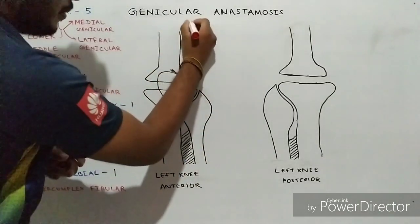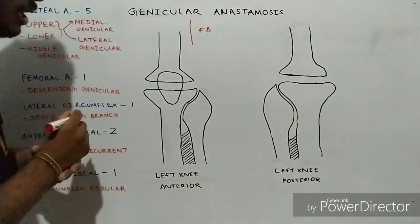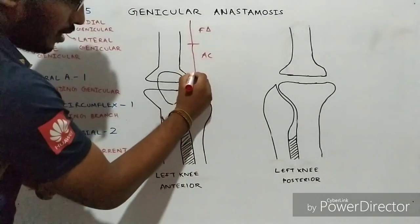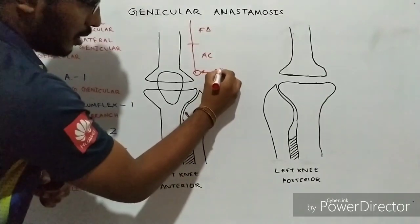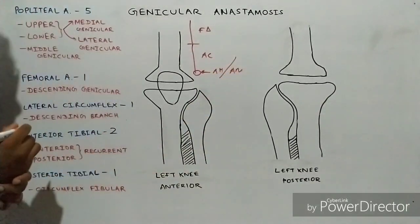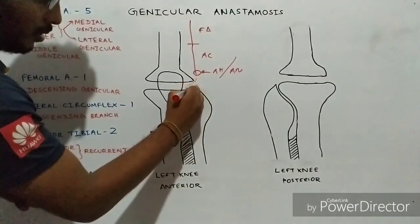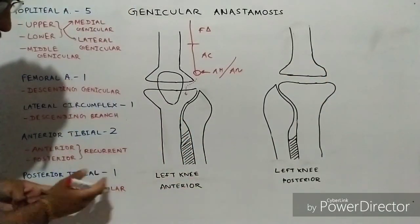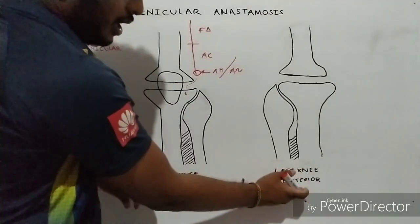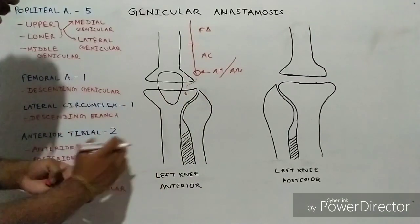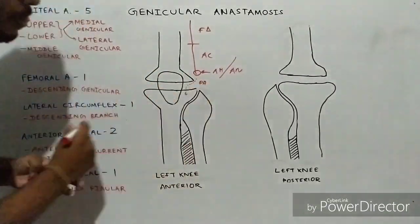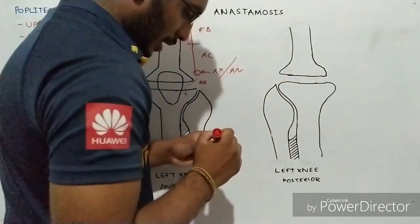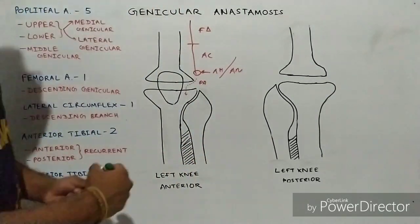As you all know, the femoral artery is the major artery supplying the lower limb. It initially lies in the femoral triangle, then passes through the adductor canal, and after passing through the adductor hiatus it enters the posterior aspect of the knee. Here I have shown the left knee from the anterior and posterior aspect. Once the popliteal artery enters the posterior aspect of the knee joint,